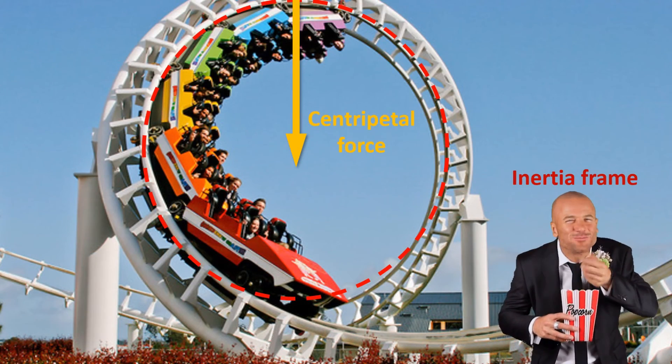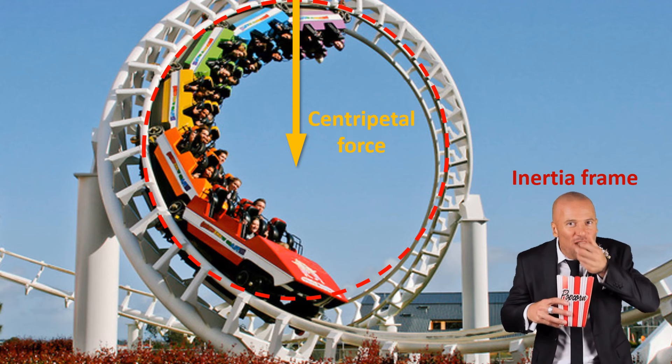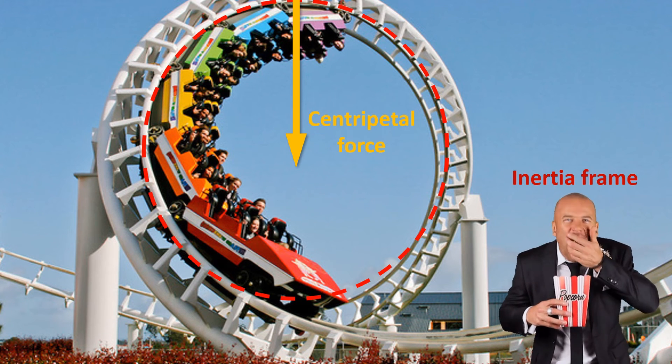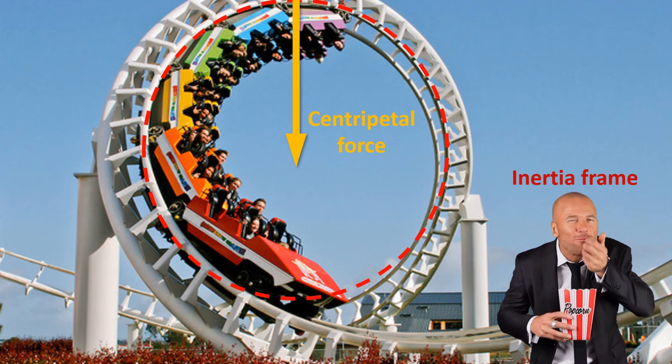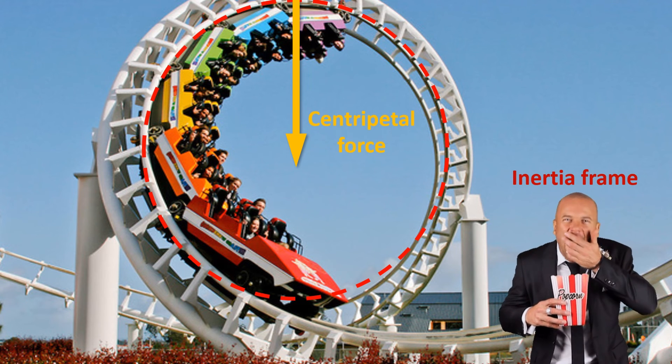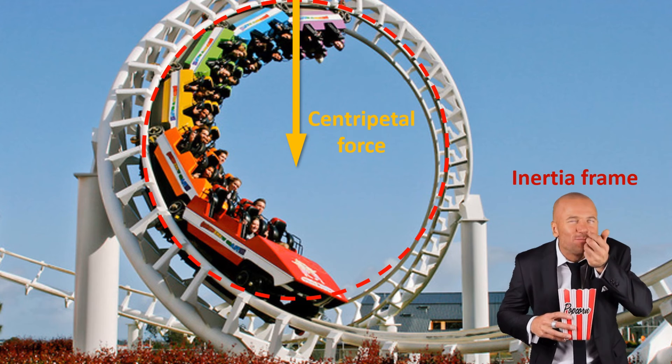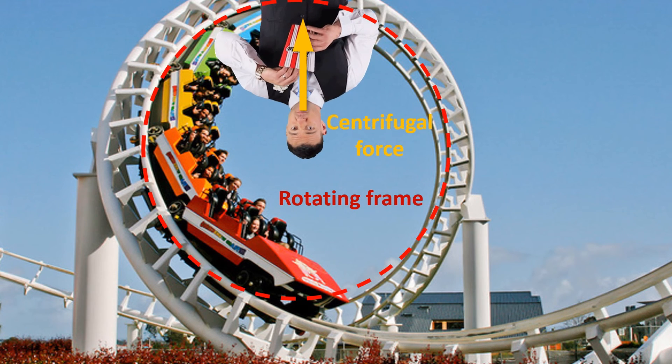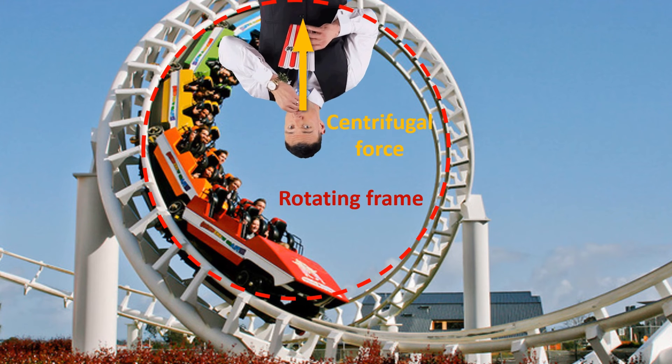Let's take the roller coaster as an example. From the perspective of the person outside the roller coaster, or the so-called inertia frame, the people in the cart are going on a circular path, thus there must be a centripetal force directed towards the center. However, from the perspective of the person in the cart, or what we call the rotating frame, he clearly feels a force pushing him outwards away from the center. This familiar force is known as the centrifugal force.